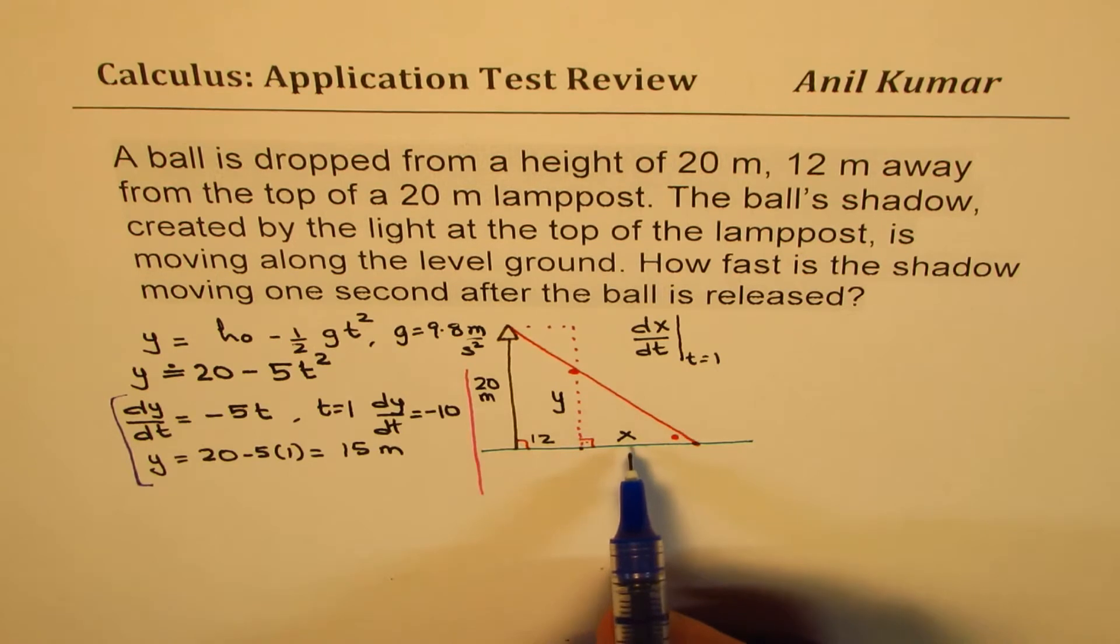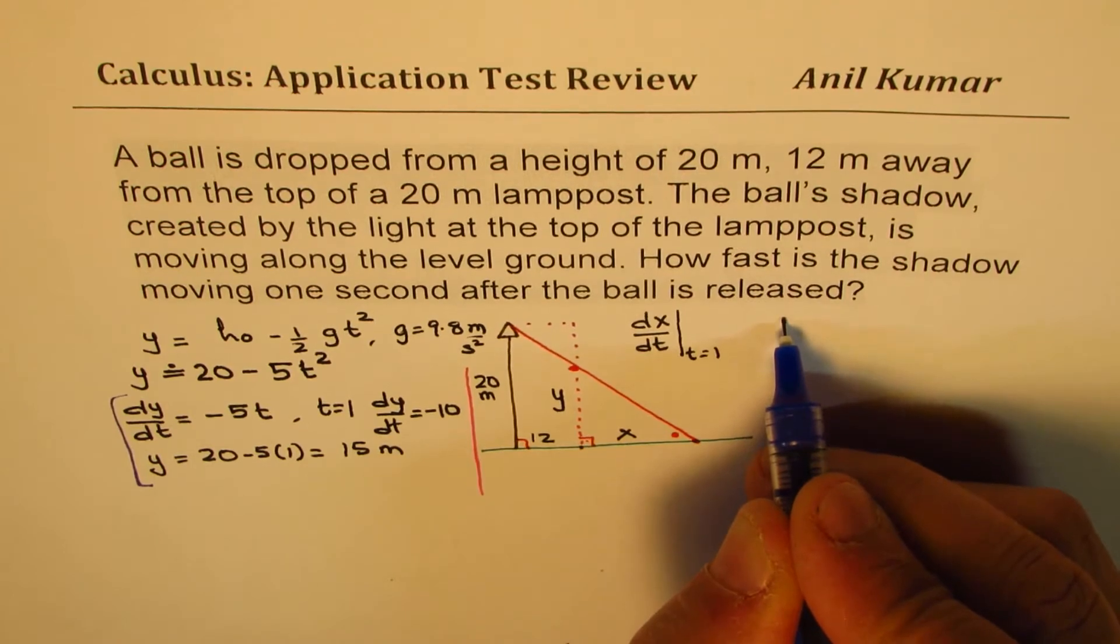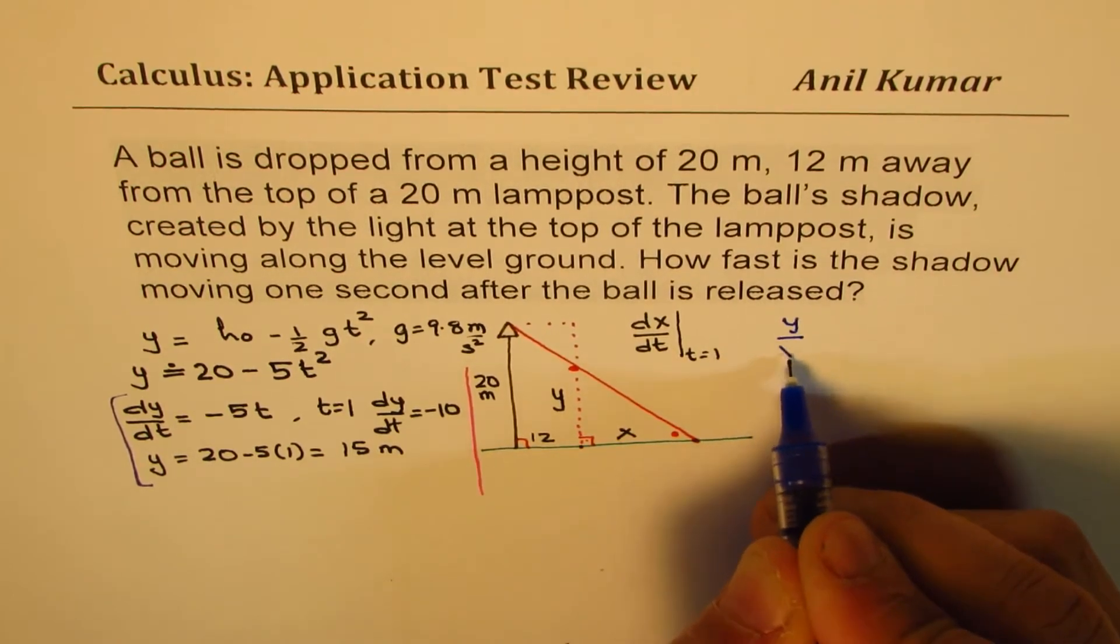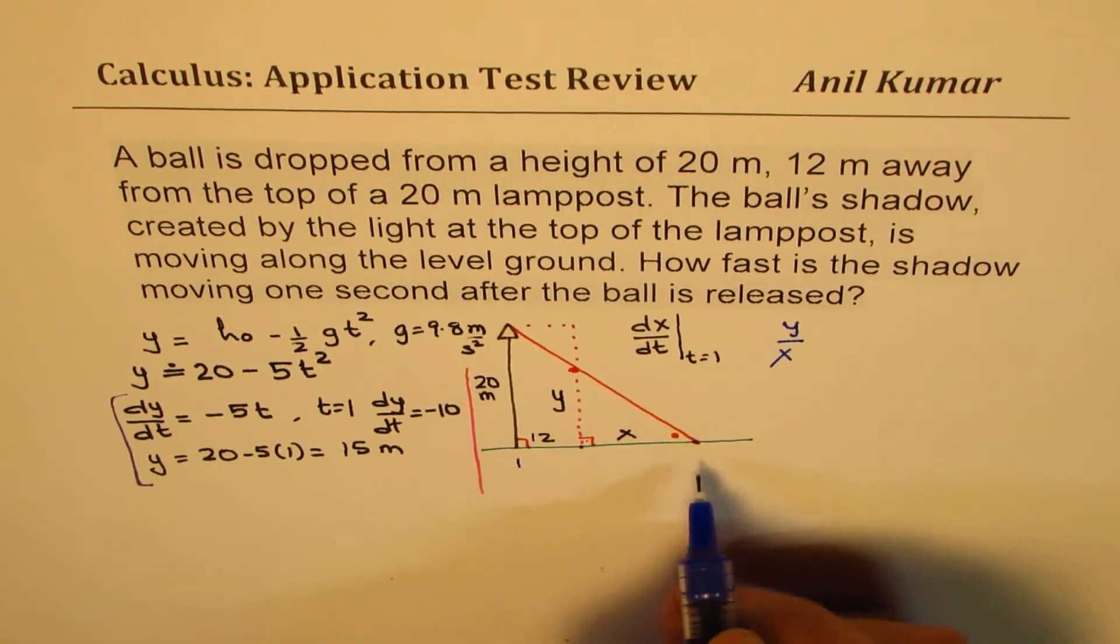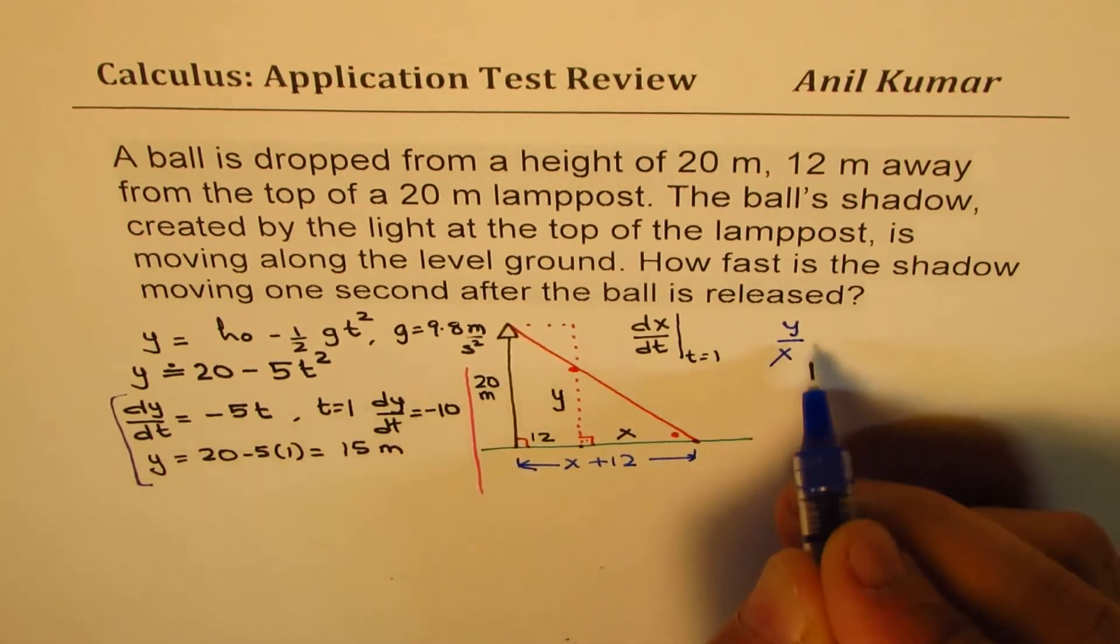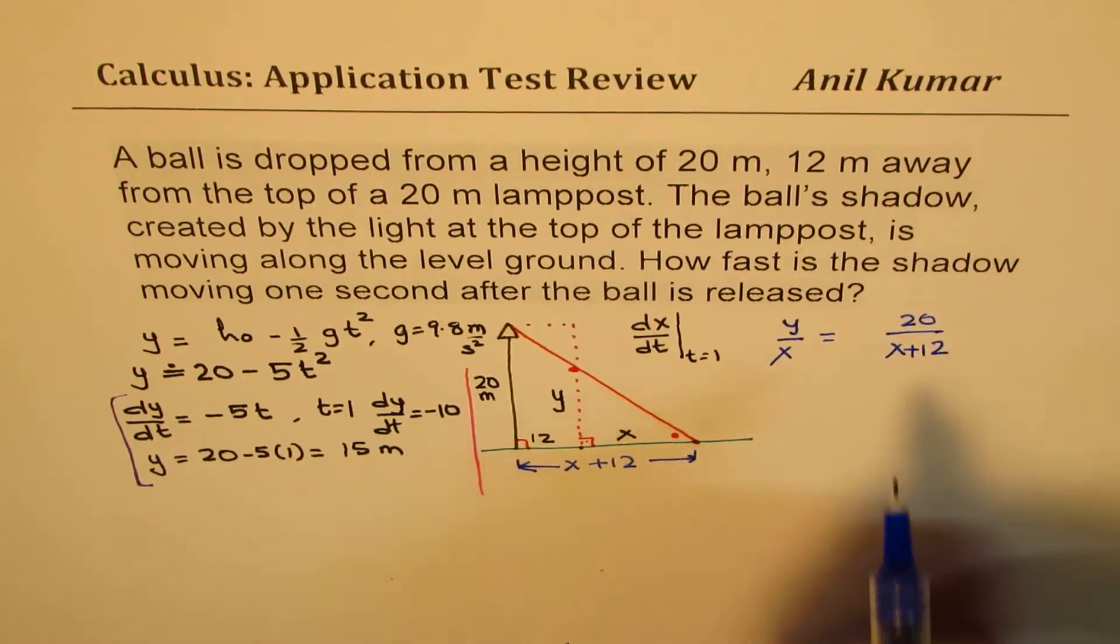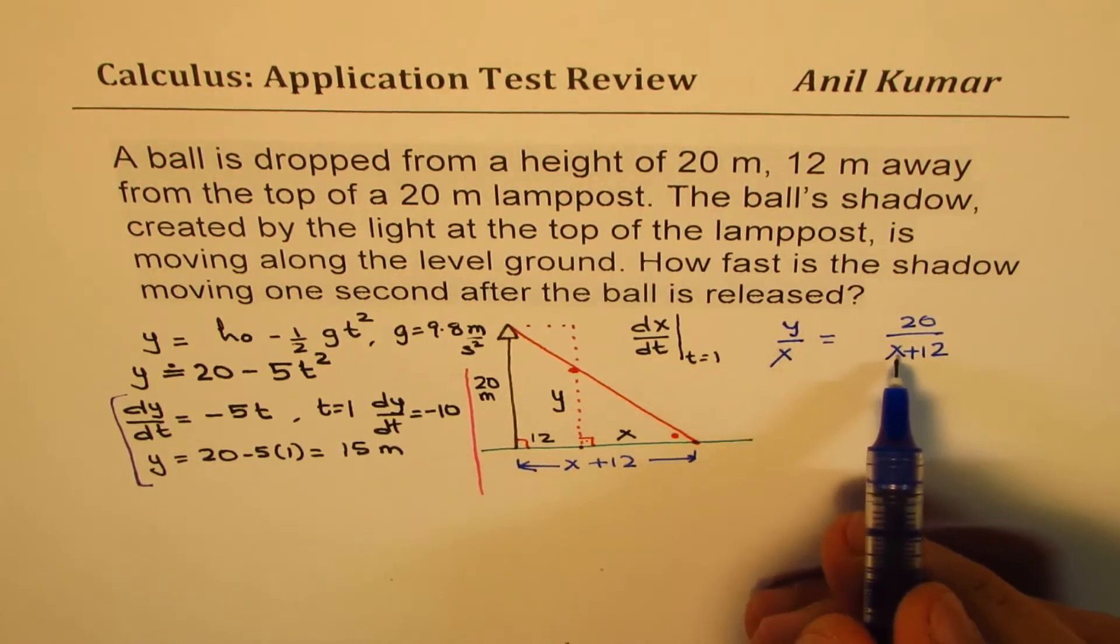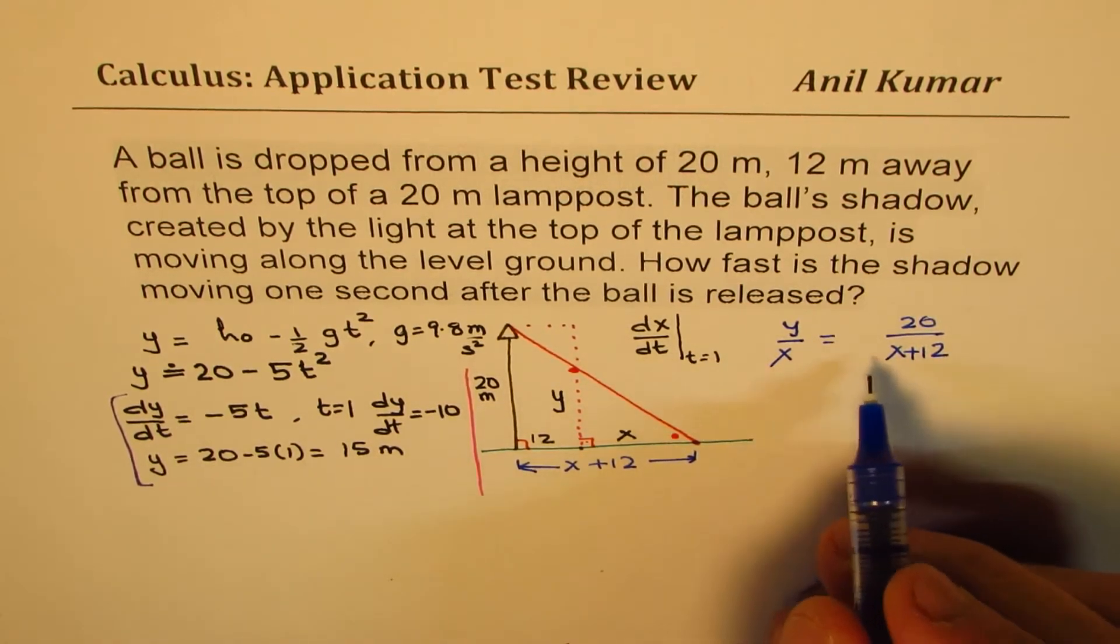So we can write y over x. Let's write y over x. So y over x is 20 over all this. All this is x plus 12. So it's 20 over x plus 12. We can cross multiply and isolate x.